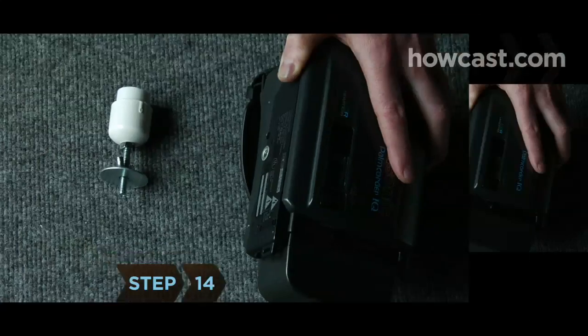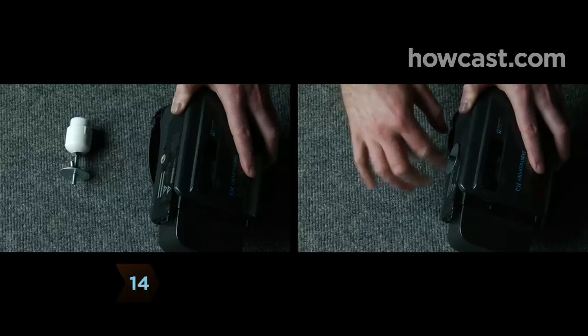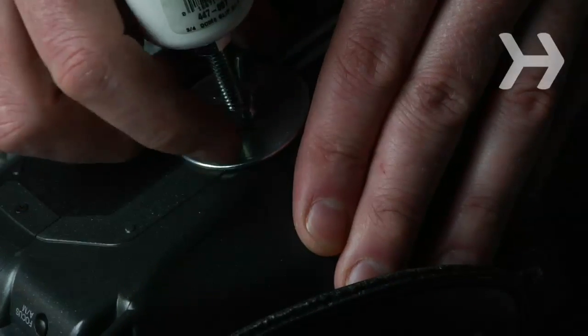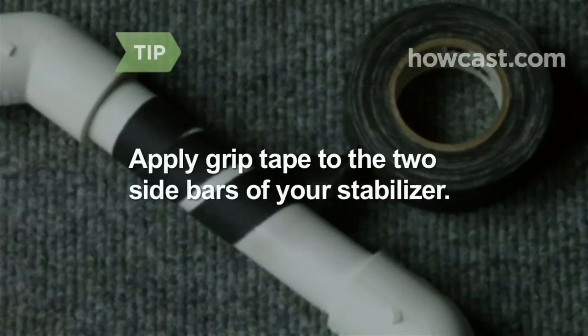Step 14. Screw the bolt into the camcorder's bottom tripod hole and tighten the wing nut. For easier handling, apply grip tape to the two sidebars of your stabilizer.